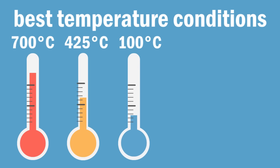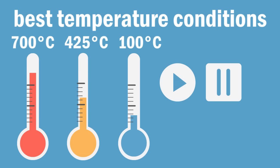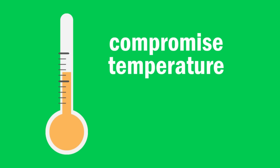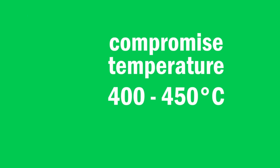Keeping Le Chatelier's principle in mind, what do you think is the best temperature conditions to maximize ammonia production? Please pause the video to think about this and resume once you are ready. Since the forward reaction is exothermic, it would make sense to conduct this reaction at a low temperature. The compromised temperature is 400 to 450 degrees Celsius, which is not exactly low, but not too high.